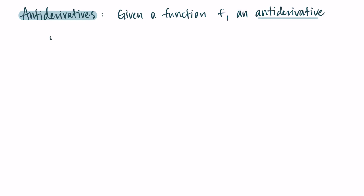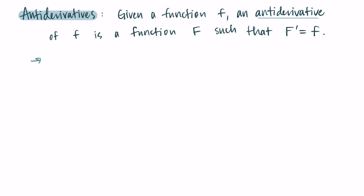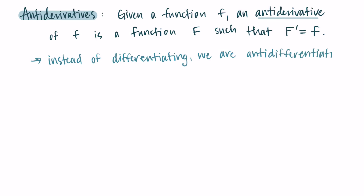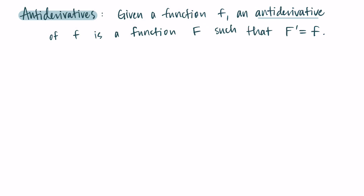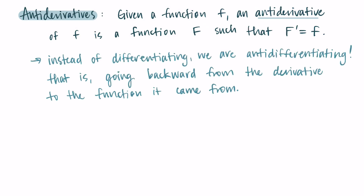If we're given a function f, an antiderivative of f would be another function — I write big F, capital F — such that the derivative of big F is equal to little f. The main idea is that we are finding a function where we take its derivative and get the function we were handed at the beginning. So instead of differentiating, we are anti-differentiating — going backward from the derivative to the function it came from.